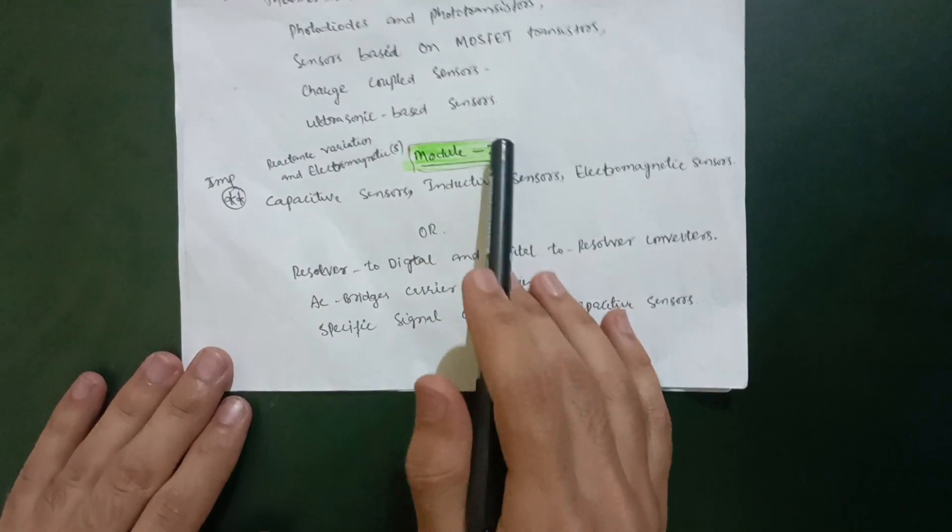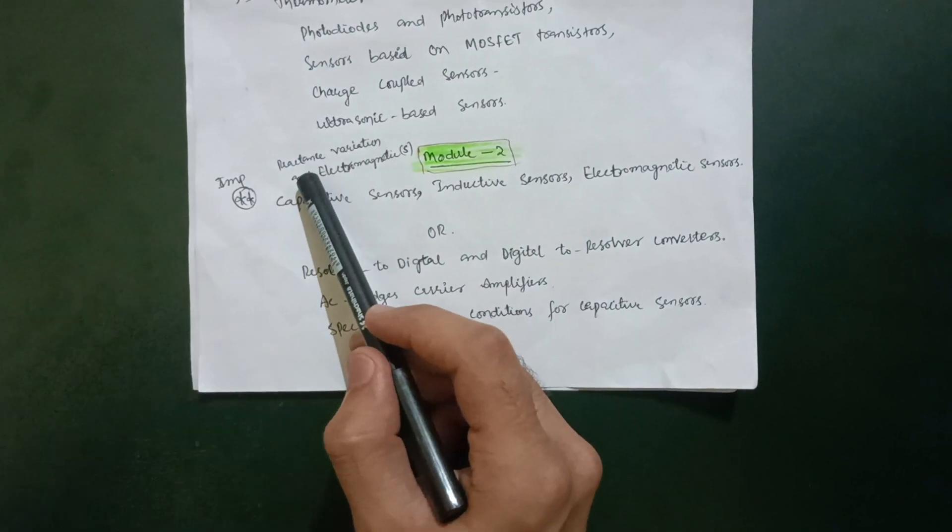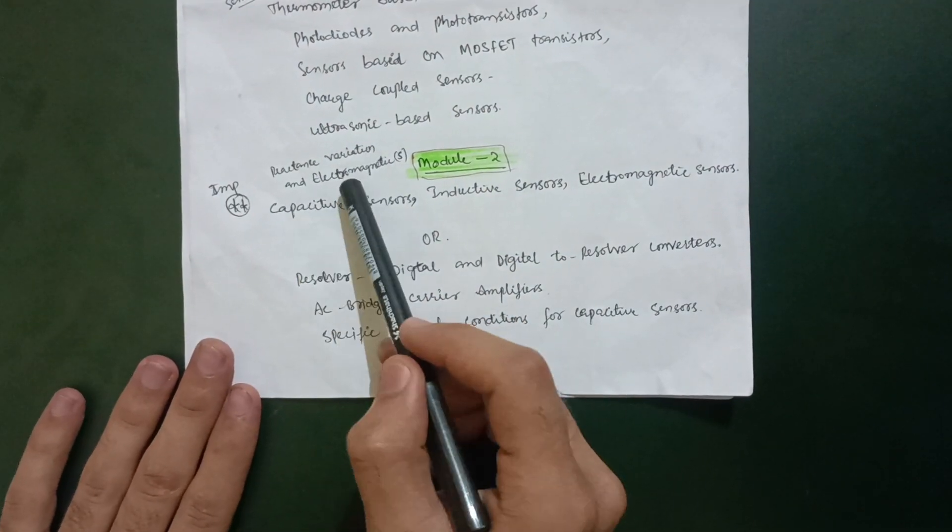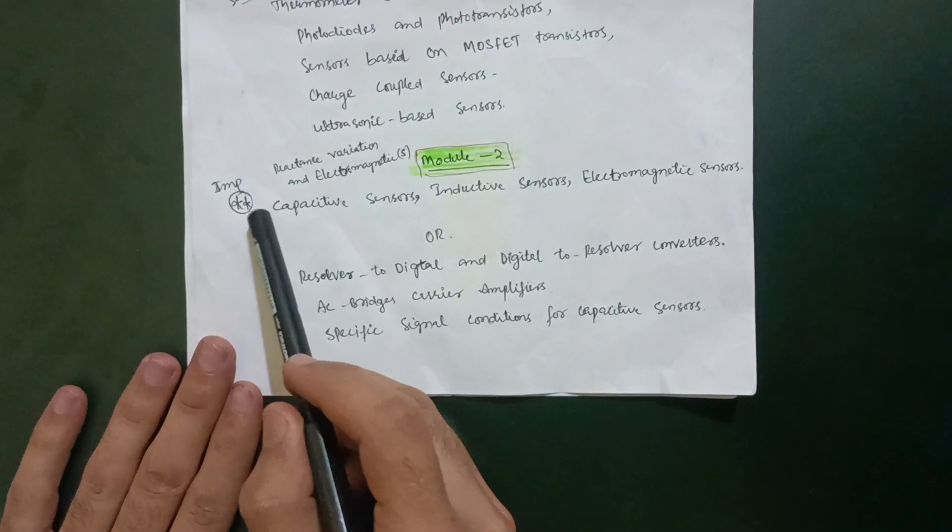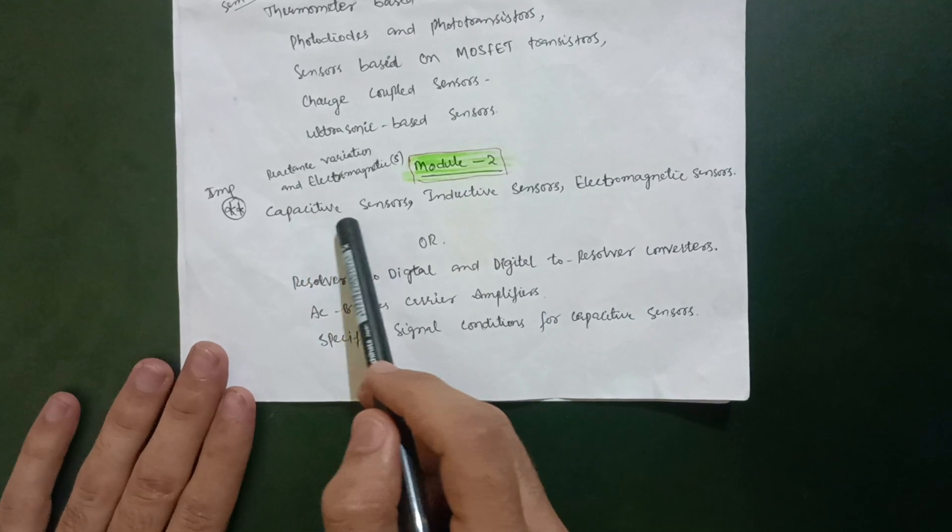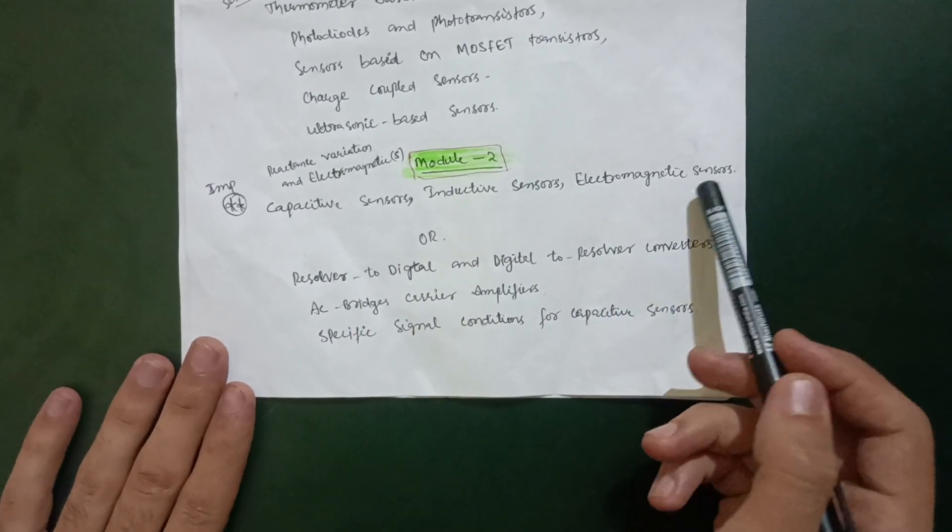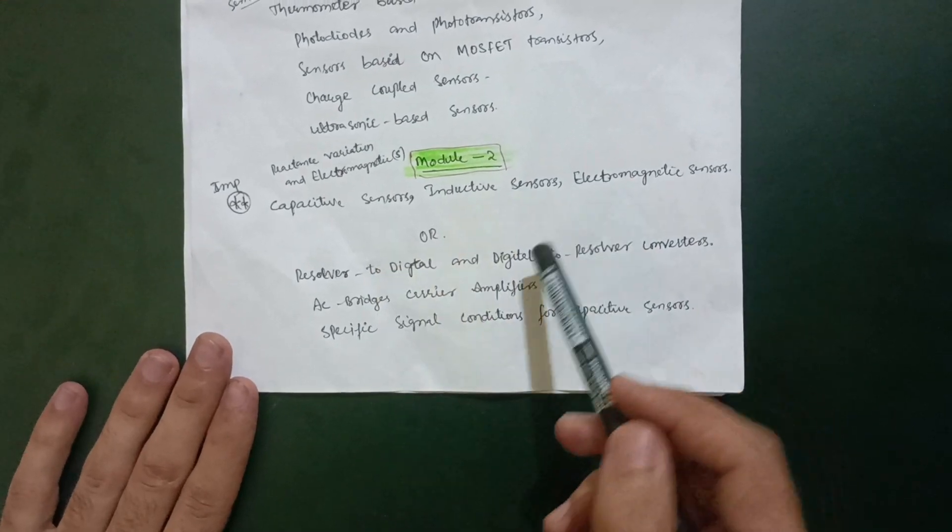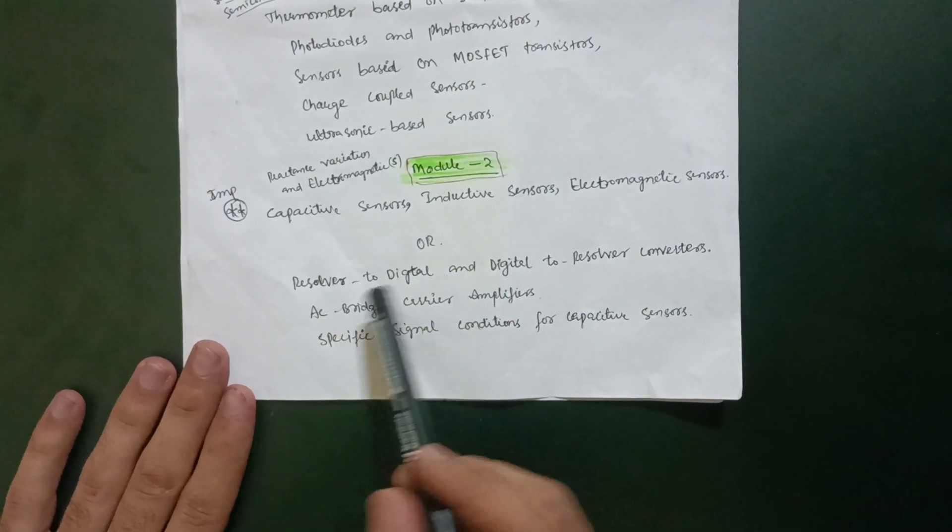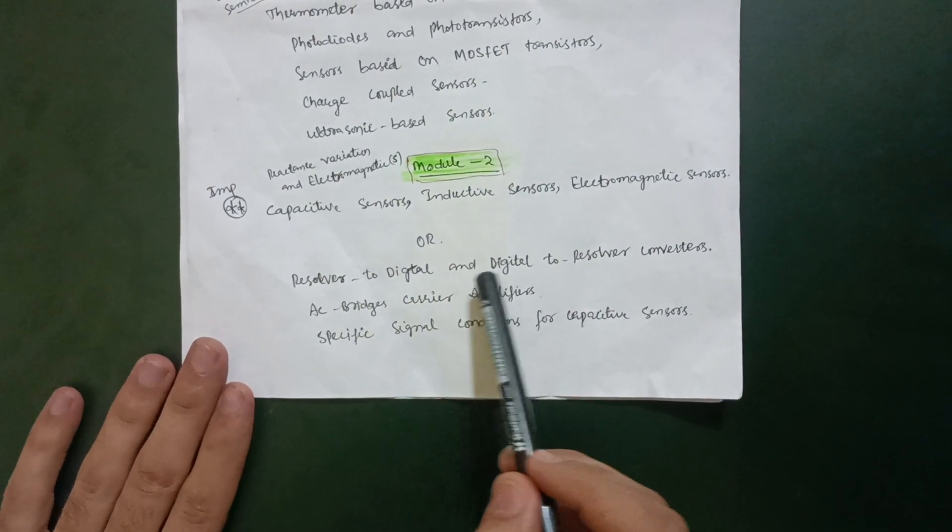Then Module 2 comes up. In this Module 2, the chapter name is Reactance Variation and Electromagnetic Sensors. The most important questions are capacitive sensors, inductive sensors, and electromagnetic sensors. This is in the first part, first chapter. Another chapter has topics like resolver to digital and digital to resolver converters.